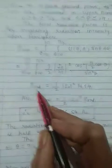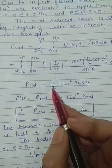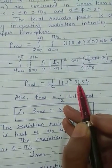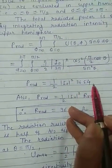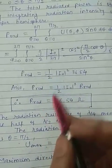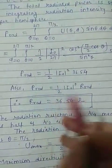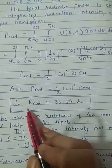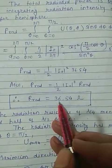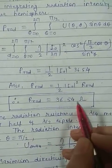total power radiated by monopole, it comes out to be 1 by 2 I0 square into 36.54. So when equated with the standard expression, we get radiation resistance of monopole is equal to 36.54 ohms, which is exactly half of that of half wave dipole.